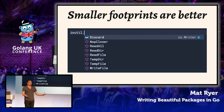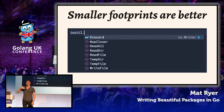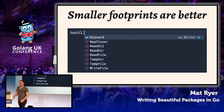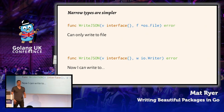Smaller footprints are better. By footprint, I mean the number of exported things. If you type 'ioutil.' in most IDEs, you get a list of what's available to you. If that list is small enough to see in one go, that's pretty good — we can see what's available in the package and know what to do with it. You can't always do that, sometimes packages grow, but the goal should be to drive towards smaller footprints if we can, just so that it's easier.